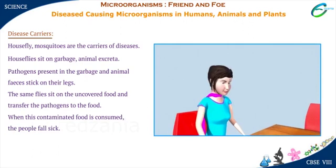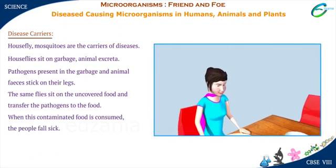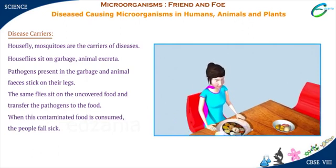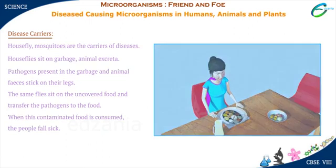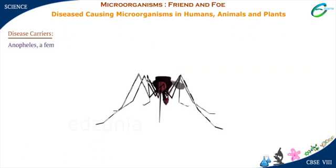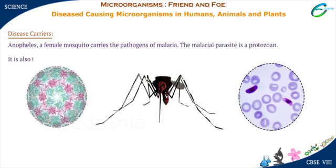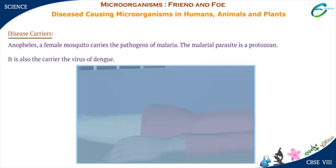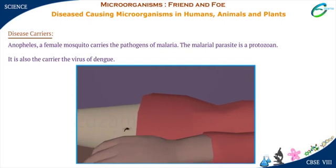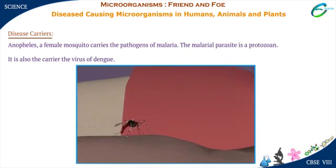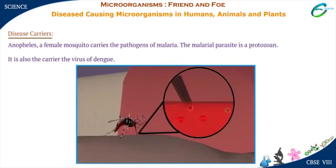Hence, it is always recommended to avoid consuming uncovered food. Anopheles, a female mosquito, carries the pathogens of malaria. The malarial parasite is a protozoan. It is also the carrier of the virus of Dengue. When mosquitoes bite humans, these pathogens are transferred to the human body.